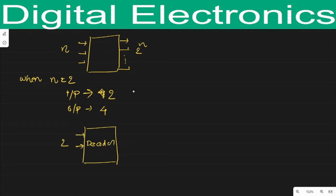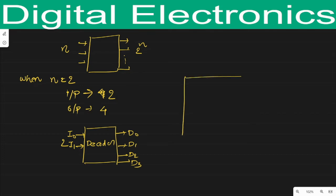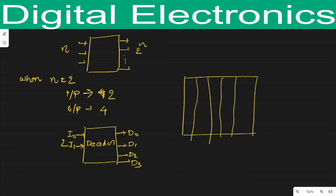The decoder circuit has two inputs and accordingly we will get four outputs. The inputs are i0 and i1, and the outputs will be d0, d1, d2, and d3. To analyze this decoder circuitry we need a truth table. In this truth table there are two inputs, i0 and i1, and four outputs.